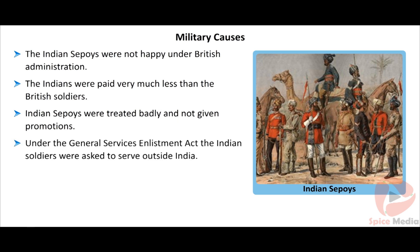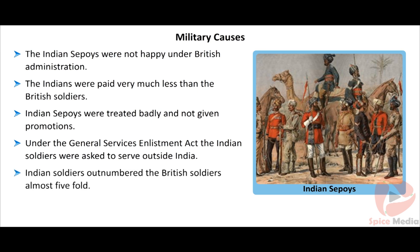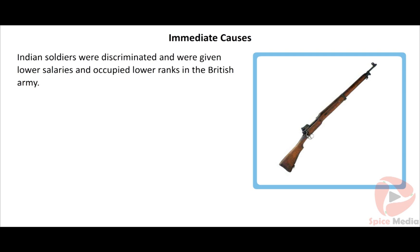Military causes: Indian sepoys were unhappy under British administration. Indians were paid far less than British soldiers, with the Subedar — the highest rank among Indian soldiers — paid less than the lowest-ranked British soldier. Indian sepoys were treated badly and not given promotions. Under the General Services Enlistment Act passed by Lord Canning in 1856, Indian soldiers were required to serve outside India, which was deeply resented. Indian soldiers also outnumbered British soldiers almost five-fold, which encouraged them to stand up against the British.